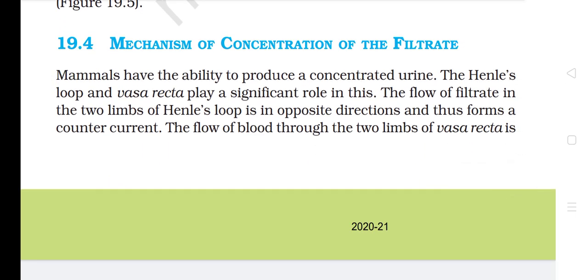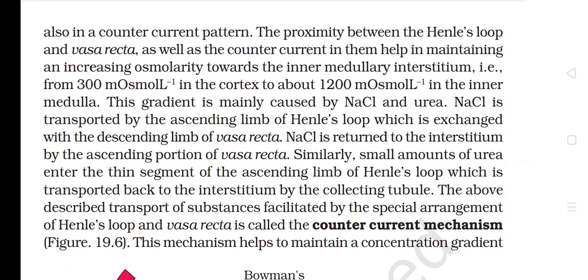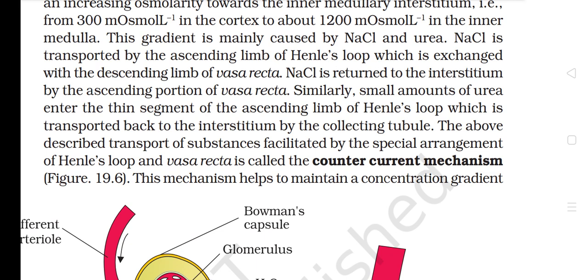Section 19.4: Mechanism of Concentration of the Filtrate. Mammals have the ability to produce concentrated urine. The Henle's loop and vasa recta play a significant role in this. The flow of filtrate in the two limbs of Henle's loop is in opposite directions, forming a counter current; similarly, blood flow through the two limbs of vasa recta is also in a counter current pattern. This proximity and counter current arrangement helps maintain an increasing osmolarity towards the inner medullary interstitium — from 300 mOsmol/L in the cortex to about 1200 mOsmol/L in the inner medulla. This gradient is mainly caused by NaCl and urea. NaCl is transported by the ascending limb of Henle's loop and exchanged with the descending limb of vasa recta; NaCl is returned to the interstitium by the ascending portion of vasa recta.